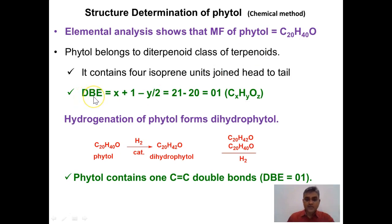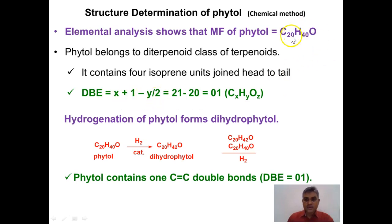Double bond equivalence or degree of unsaturation tells us how many double bonds or rings are present in the phytol molecule. For a molecule CxHyOz the double bond equivalence is calculated by the formula: X + 1 − Y/2. Substituting the values of carbon and hydrogen, the degree of unsaturation is found to be 1. This means phytol may contain one double bond or it may be a monocyclic molecule.